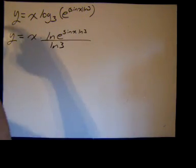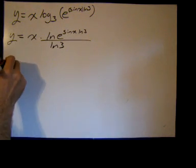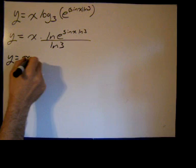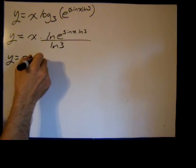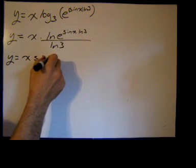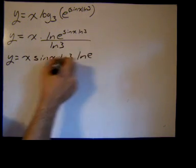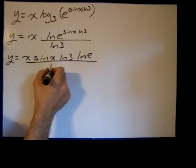Now I'm going to use properties of logarithms to bring down the exponent of the argument and I'll get y equals x times the sine of x times the natural log of 3, that's the exponent, times the natural log of e. The natural log of e is of course 1.